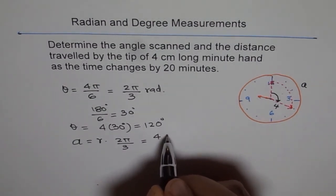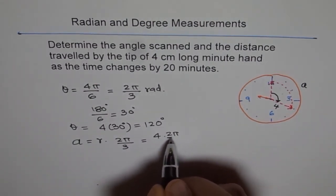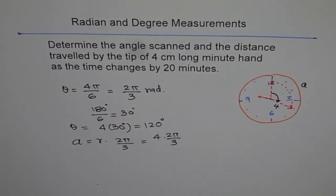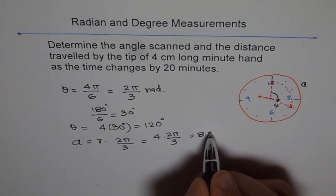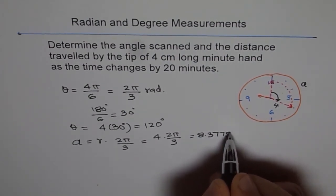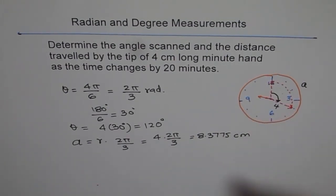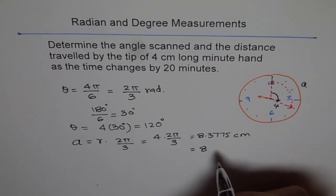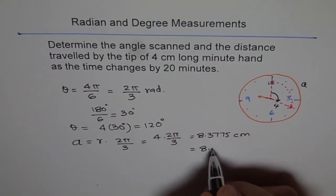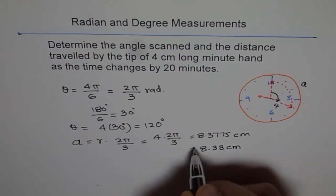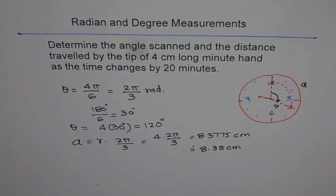Now, which is 4 times 2 pi by 3. So, let's calculate this and write down our answer. So, we have 4 times 2 times pi divided by 3. We get 8.3775. And the units are centimeters. So, that is the length and we can always write this. It's not mentioned. So, let's write it to 8.38 centimeter. Round it to the 100th place. So, that is the arc length.